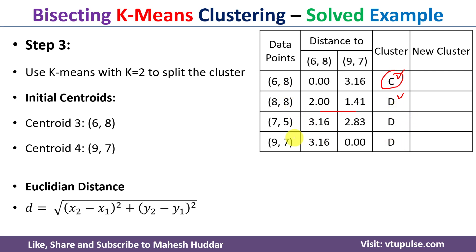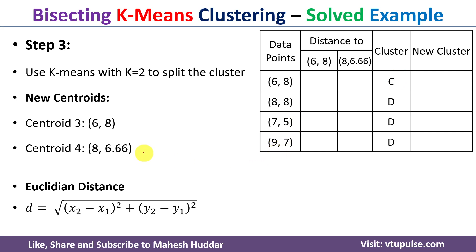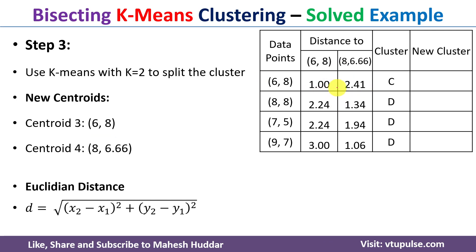After the first assignment, cluster C contains one data point and cluster D contains three data points. We calculate new centroids: for C the centroid remains (6, 8) since there is only one point; for D the centroid is (8, 6.66). We recalculate distances to the new centroids. Comparing assignments, there is no change from the previous iteration, meaning k-means has converged. Cluster C contains (6, 8) and cluster D contains three data points.